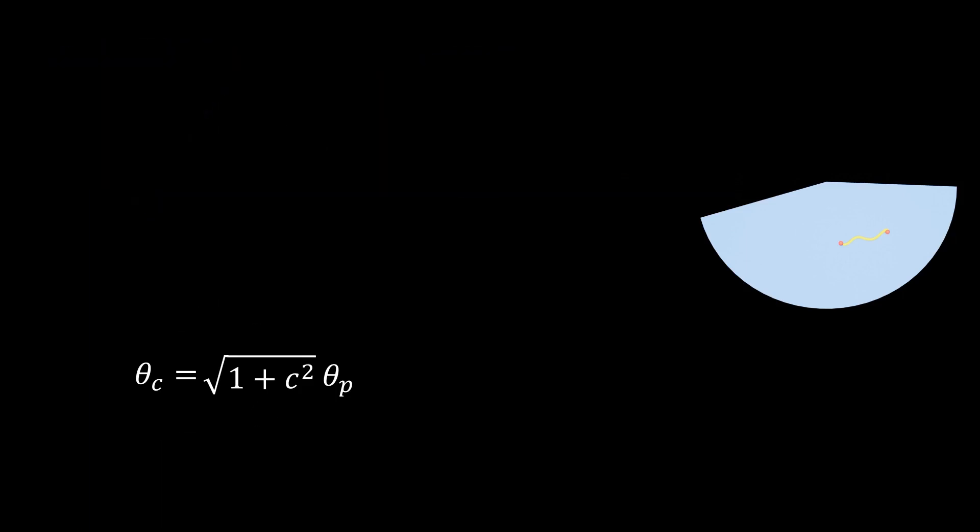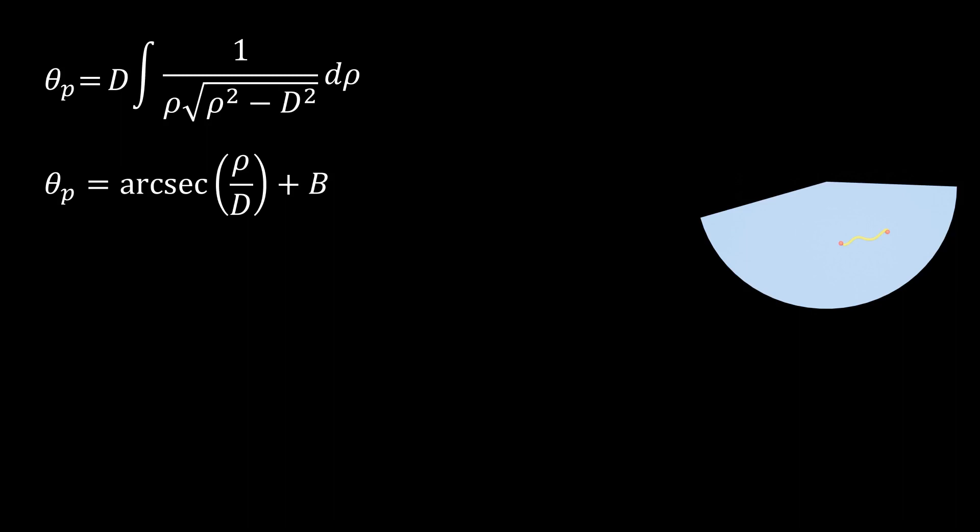Here's our integral from earlier, where I've replaced theta with theta c since we're on the cone and pulled out the constant. If we replace theta c with the expression we just found, we can divide out the square root of 1 plus c squared from both sides. It'll be easier to show this is a straight line if we evaluate the integral. Doing so, we see that theta p is equal to the arc secant of rho divided by d plus b, where b is another constant.